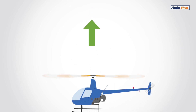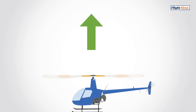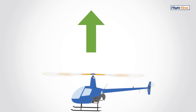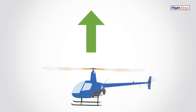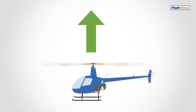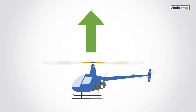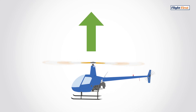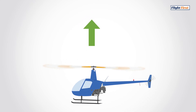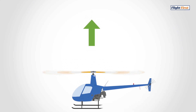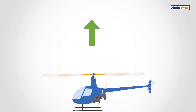Lift is what makes the helicopter go up. By increasing the strength of the lift vector, we can induce a climb. This can be done by lifting the collective, which in turn will increase the angle of attack of the main rotor blades. Lowering the collective will decrease the strength of the lift vector and the helicopter will start to sink.